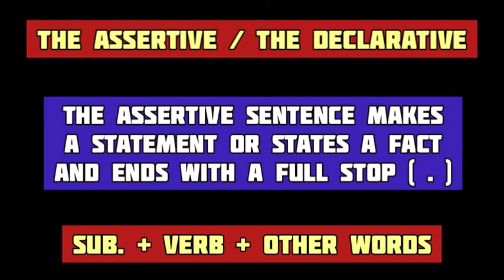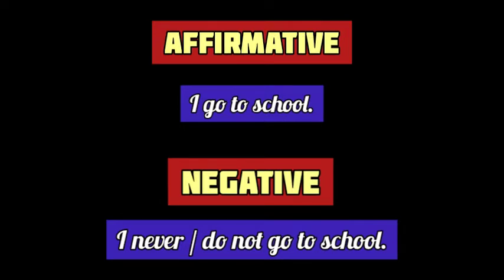First up, the assertive or declarative sentence. As the name suggests, an assertive sentence makes a statement or states a fact and it ends with a full stop. The structure of the assertive sentence is the subject followed by the verb and then the other words. Assertive or declarative sentences have two subtypes: the affirmative and the negative. The affirmative sentence makes a positive statement whereas the negative sentence makes a negative statement with the use of no, not, or never.